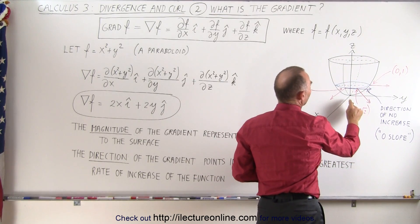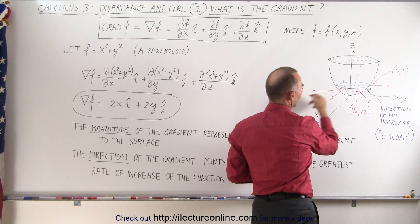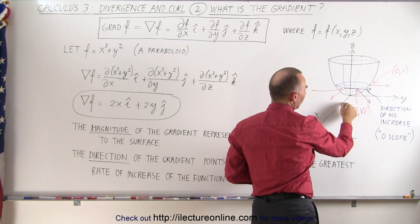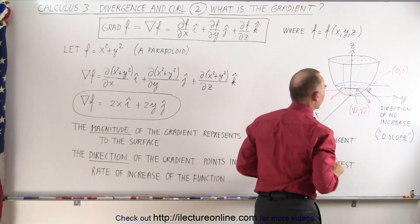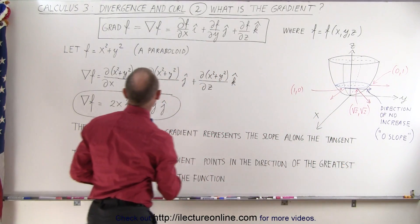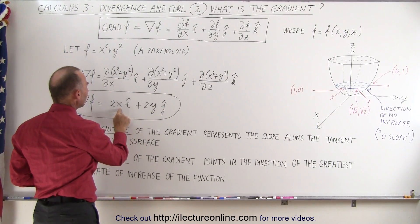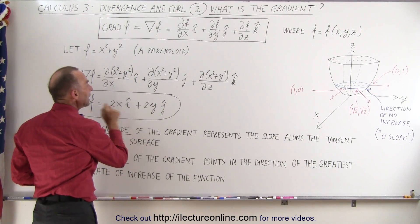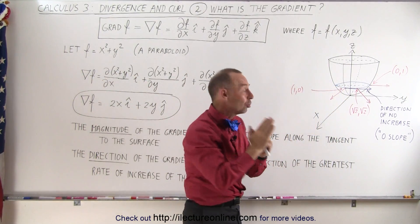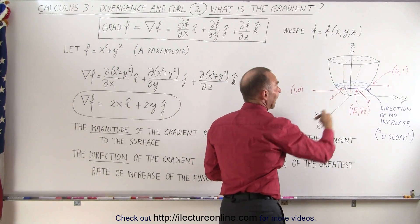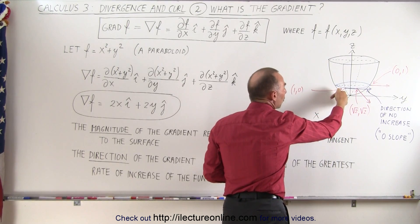Here we have the paraboloid. Let's go to the point where x equals 1 and y equals 0. We move along the x-axis to x equals 1, with y equal to 0, and go up to the surface. When y equals 0 the j-component is 0, and when x equals 1 the i-component equals 2. So at that point the slope equals 2 along the tangent of the surface, and the vector points in the x-direction — the direction of steepest slope.